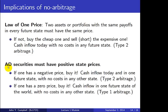A second implication of no arbitrage is that Arrow-Debreu securities must have positive state prices. Suppose you saw an Arrow-Debreu security with a negative price — you should buy it, since buying something at a negative price means you're paid to take it, giving you a cash inflow today plus cash in one future state with no costs elsewhere — a type two arbitrage. Even if the state price is zero rather than negative, you should still buy it: you'd get a cash inflow in one future state with no costs anywhere else — a type one arbitrage.